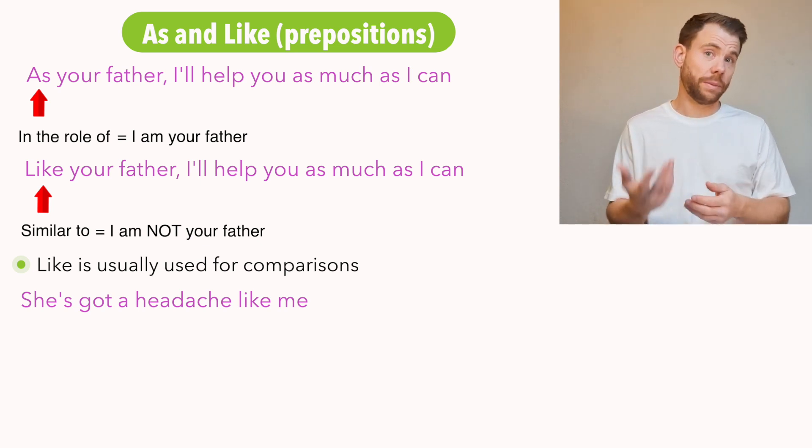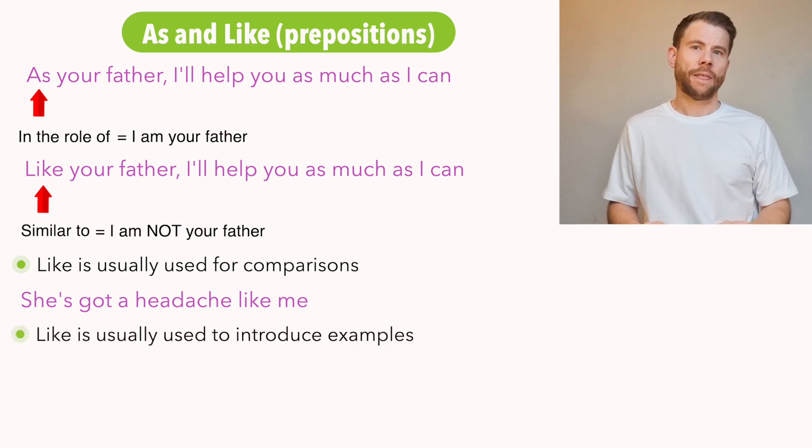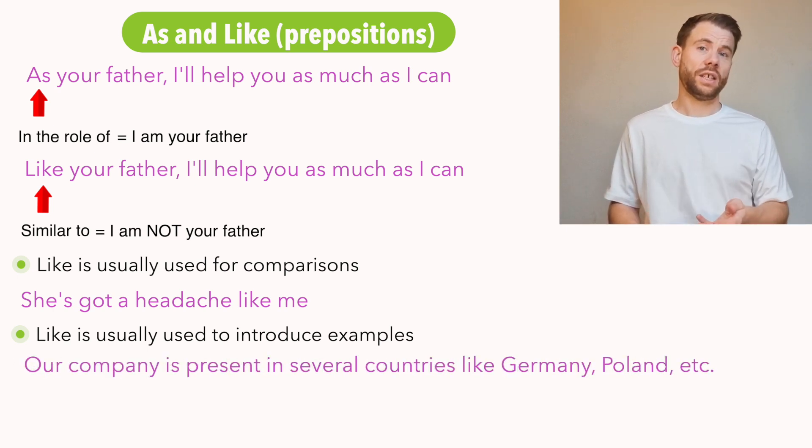Also, with the same logic, when you introduce a list of examples, a list of nouns, and you want to say these are examples of something which are similar to the example that I've given, then you need to use like. You could say, our company is present in several European countries like Germany, Poland, etc.